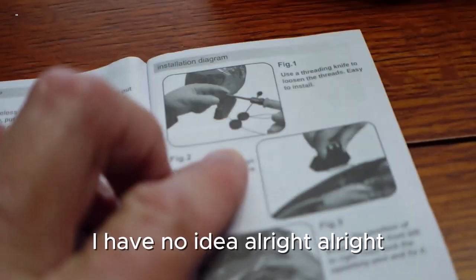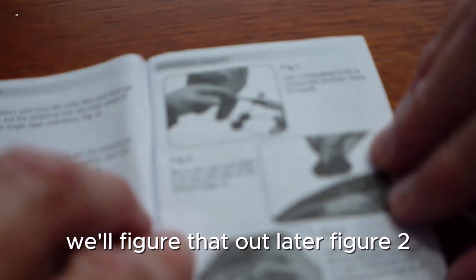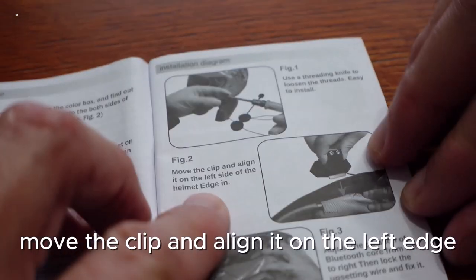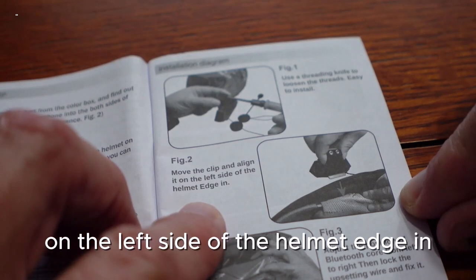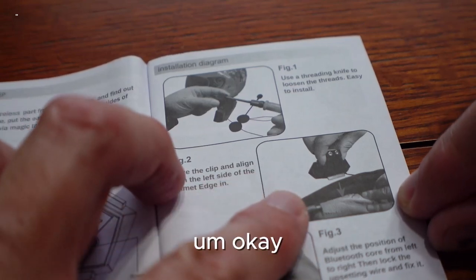All right, let's skip figure two. We'll figure that out later. Figure two: move the clip and align it on the left edge, on the left side of the helmet edge. Okay, I don't quite get that either.